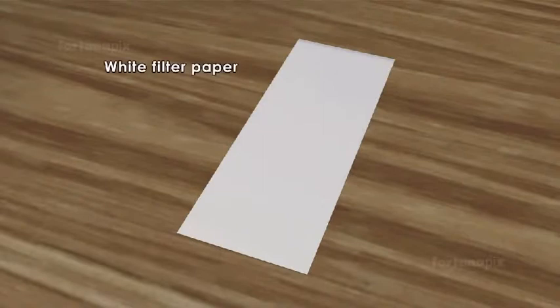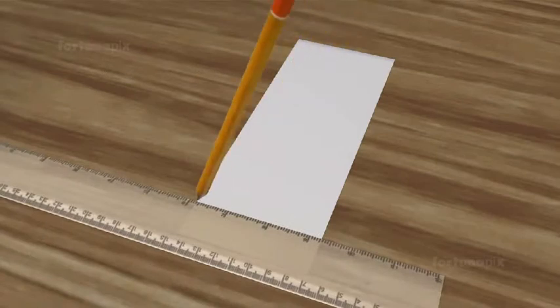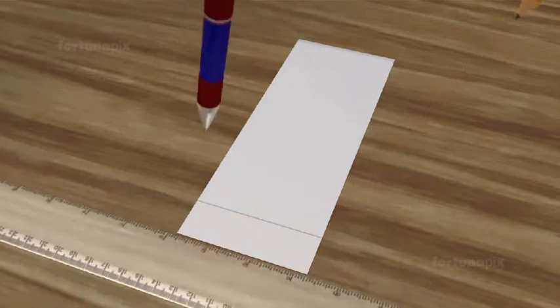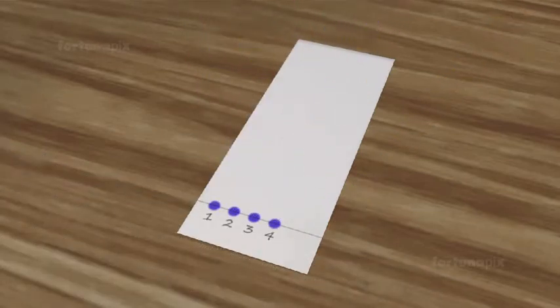Take a rectangular white filter paper that will easily fit into a beaker. With a pencil, draw a horizontal line on one end of the paper. On the line, mark a dot with each of the pens to provide a sample of ink.